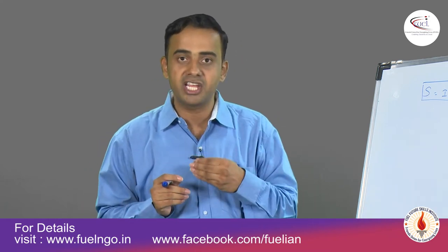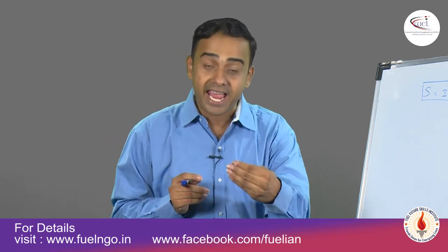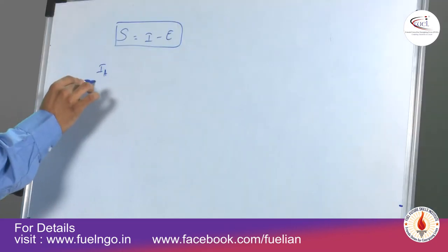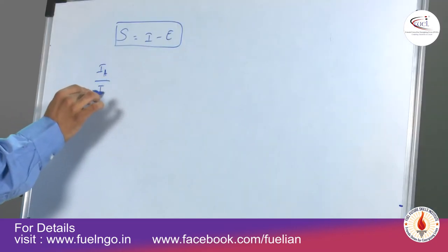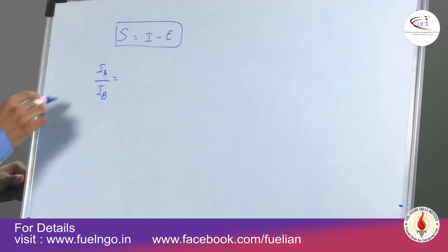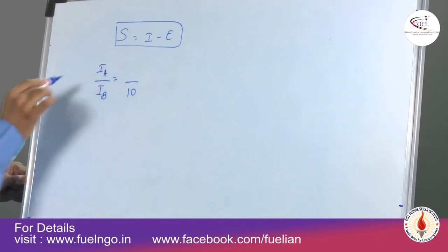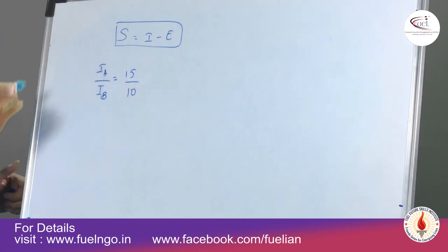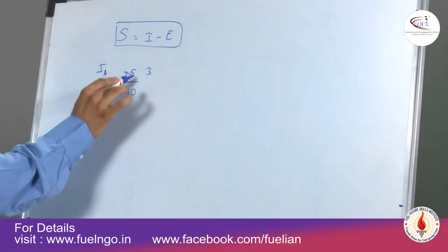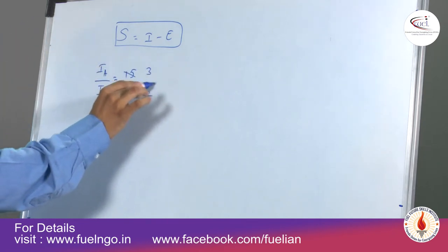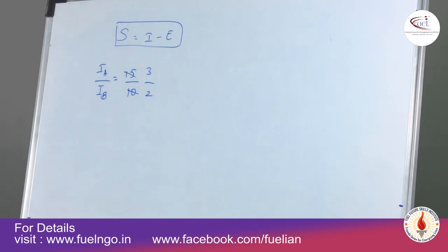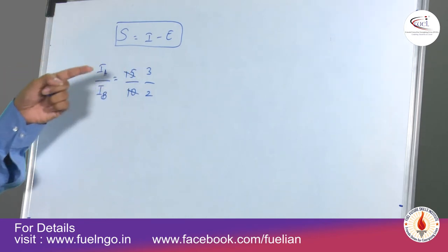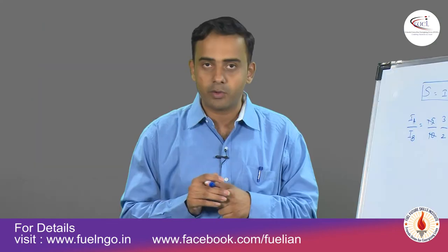First line of the question: income of A is 50% more than B. If B has earned 10 rupees, then A is 50% more — that's 15. So that ratio will be 3 to 2. Income of A to income of B is equivalent to 3 by 2.